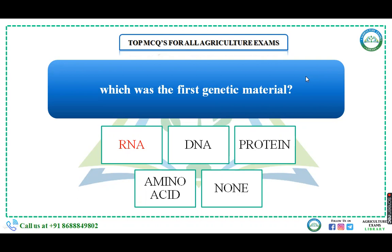DNA is made of two polynucleotides. Now let's talk about RNA. In case of DNA it was double-stranded, but in case of RNA it is single-stranded — there is no double strand in RNA except in a few exceptions. So DNA is double-stranded and RNA is single-stranded.